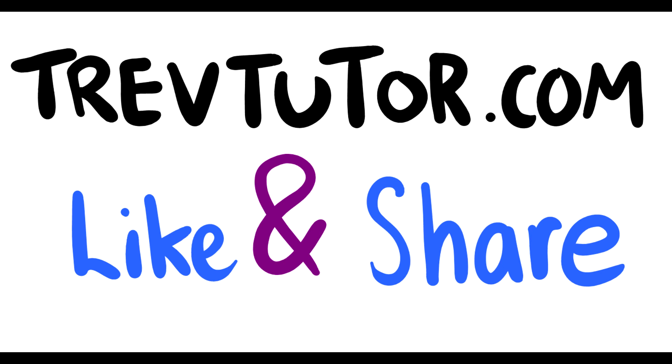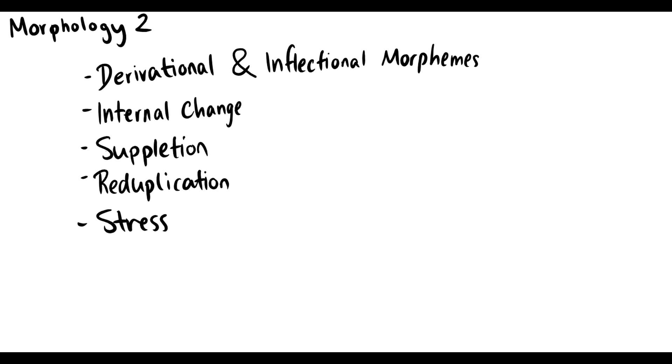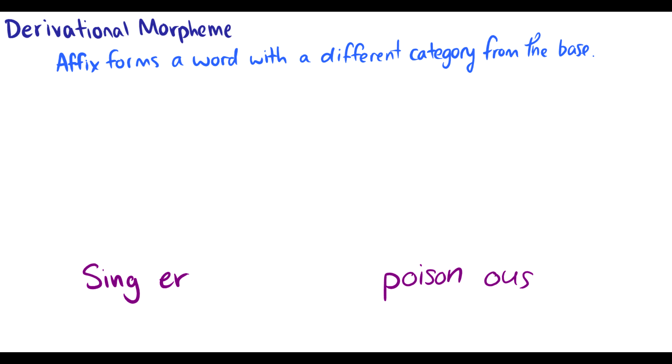Welcome back to Introduction to Linguistics. Today we're going to look at some more morphology, specifically derivational and inflectional morphemes, and we're going to look at some ways that we put bound morphemes into free morphemes and what happens when we change tense and stuff. So we have internal change, depletion, reduplication, and stress. These are very interesting topics, and we've already looked at this first part a little bit, and that's derivational morphemes.